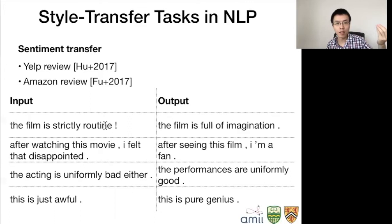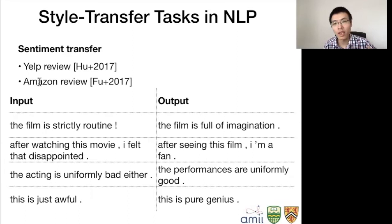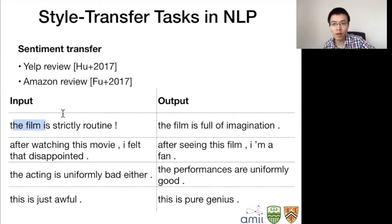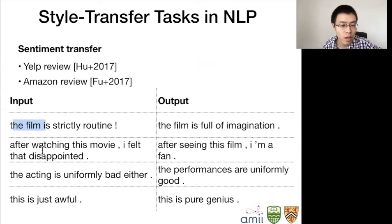Here's an example — sentiment style transfer. Using datasets like movie, restaurant, or product reviews, the input might be 'the film is strictly routine', which is a negative style. You are implicitly given the positive style, and you generate 'the film is full of imagination.' It's in the opposite style, but they share something in common — in both cases the subject is film, and you're talking about the creativity of the film. You use different words to express different sentiment.